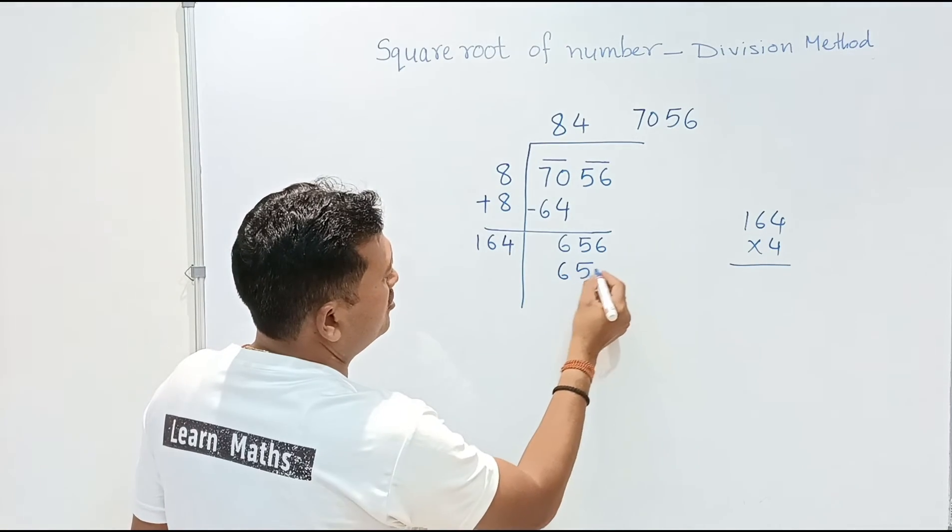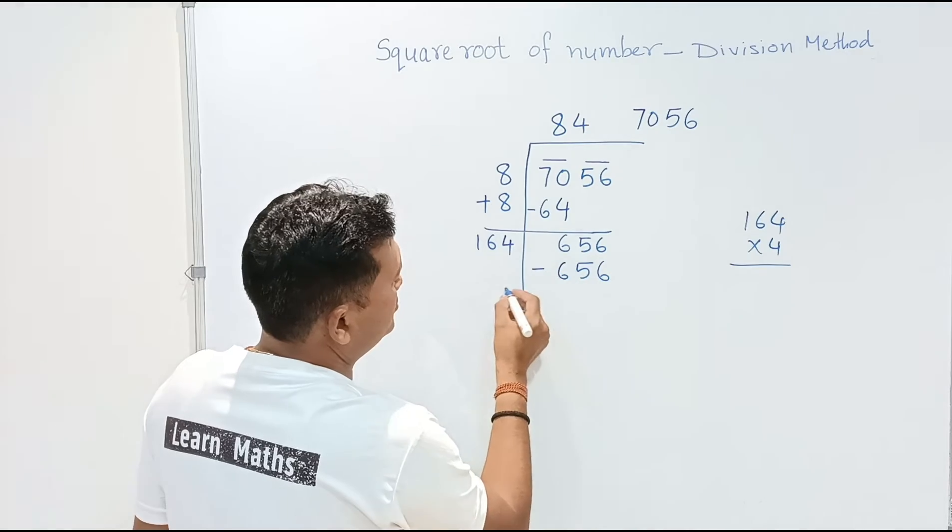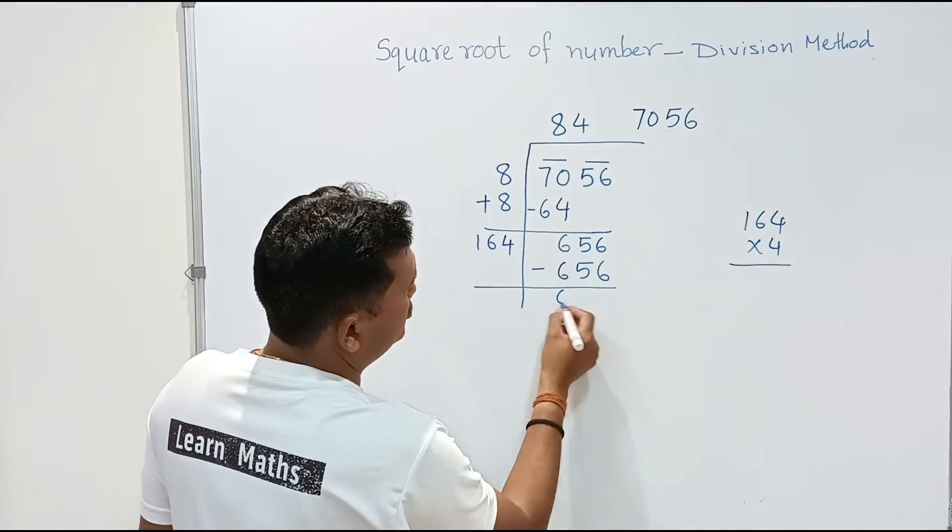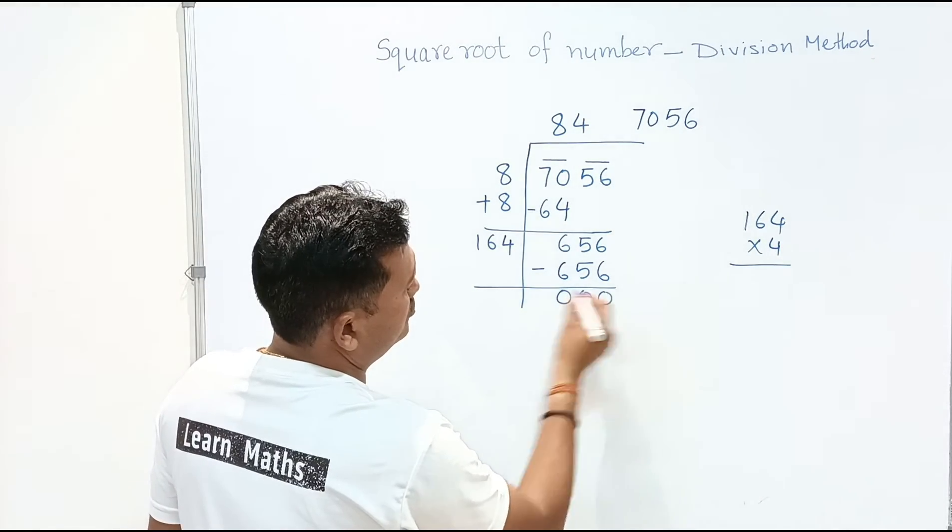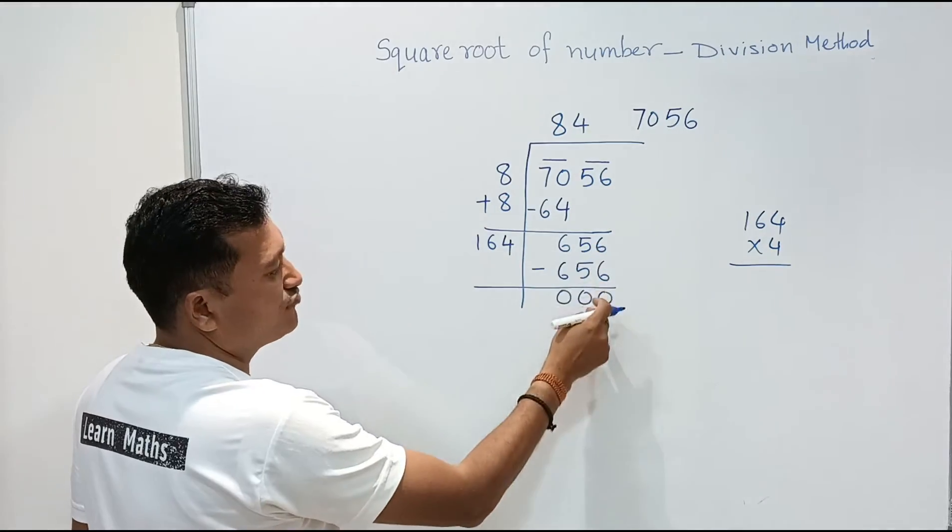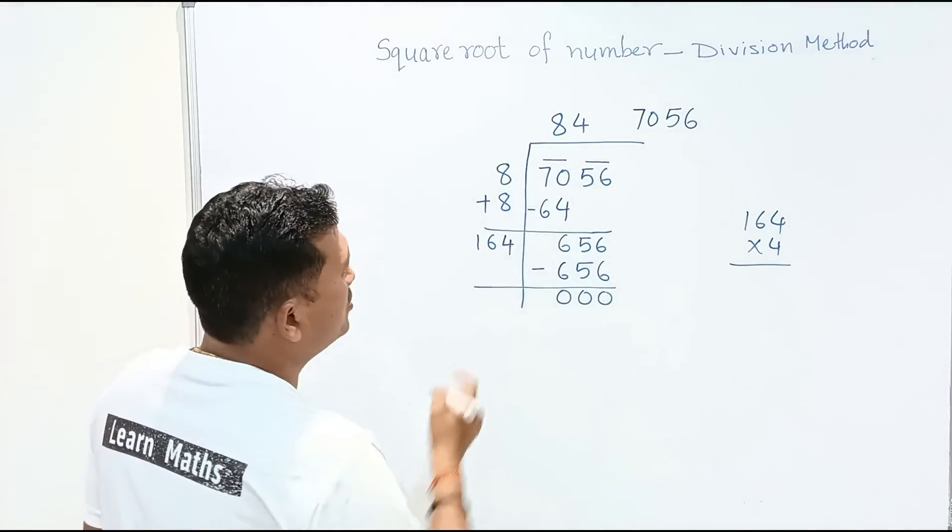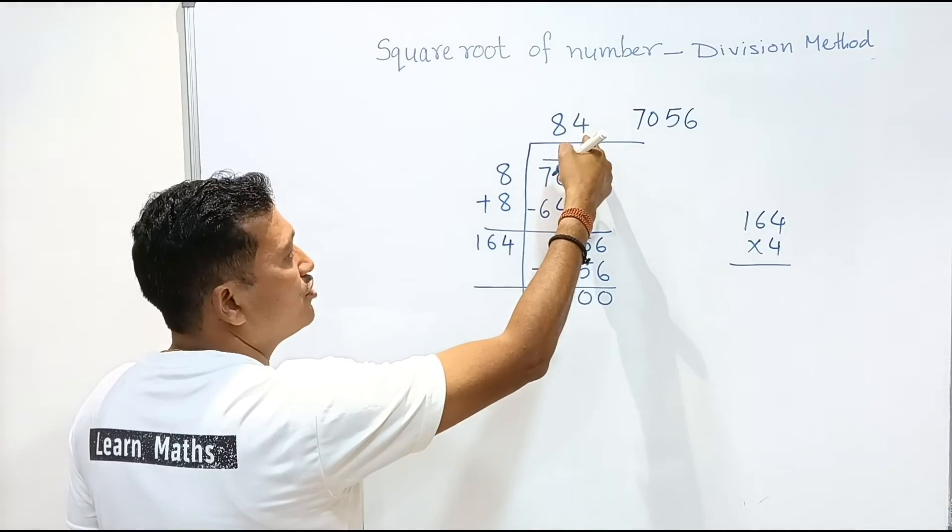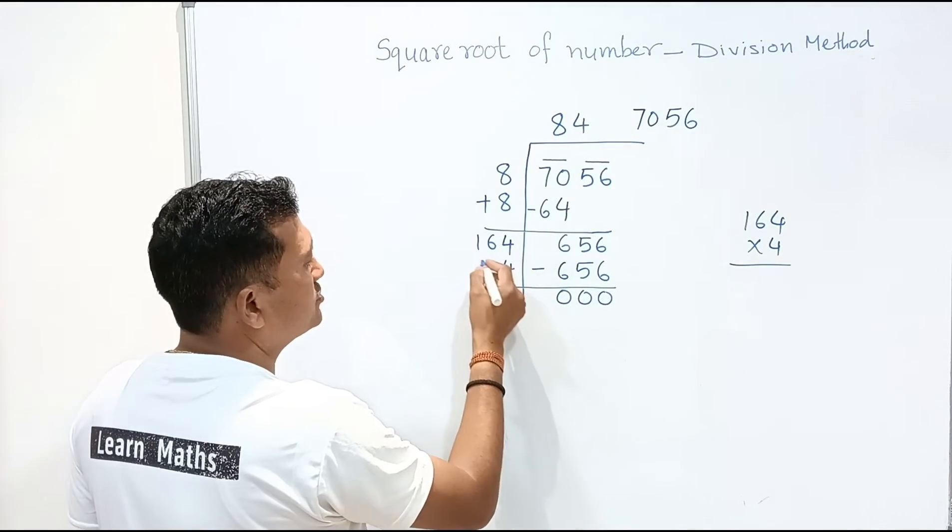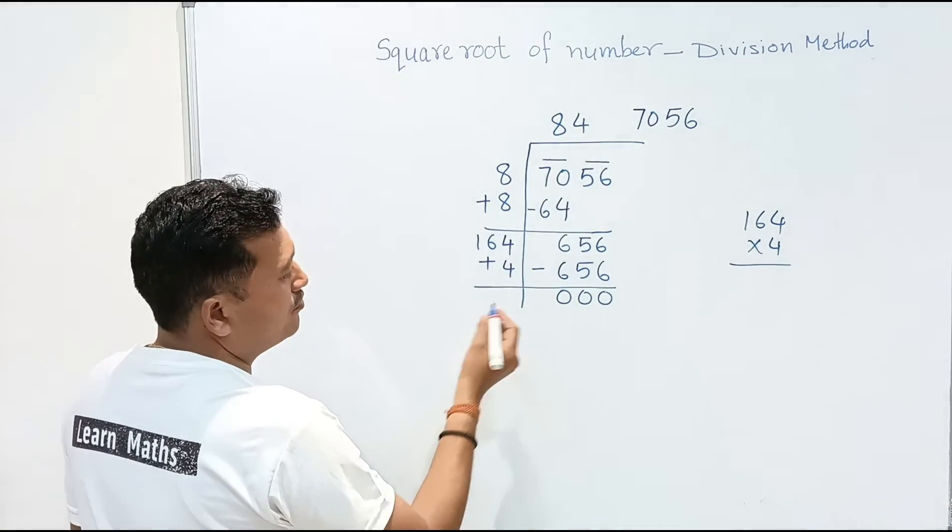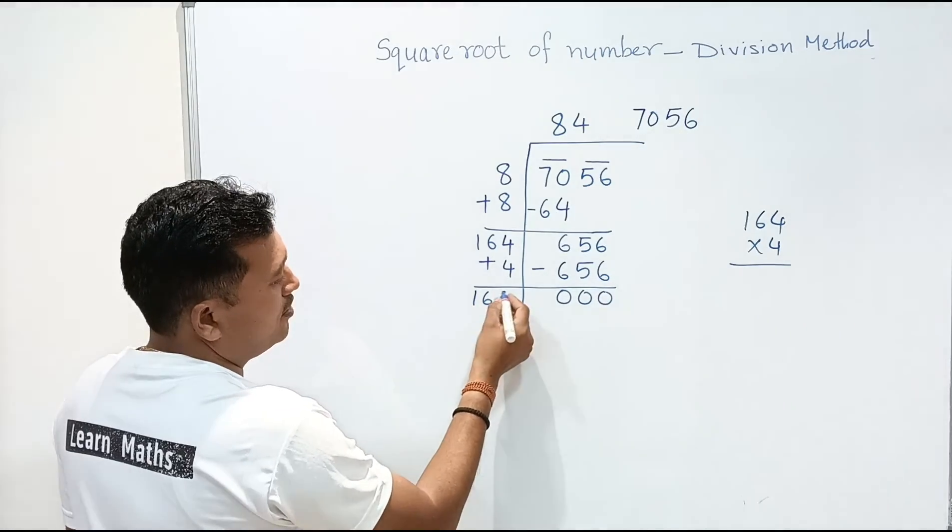So we'll take here 656 will minus. We'll get here 0, 0, 0. 6 minus 6 is 0, 5 minus 5 is 0, 6 minus 6 is 0. And this 4 the number which we have taken over here just now is 4. We will add with this. So 164 plus 4 is 168.